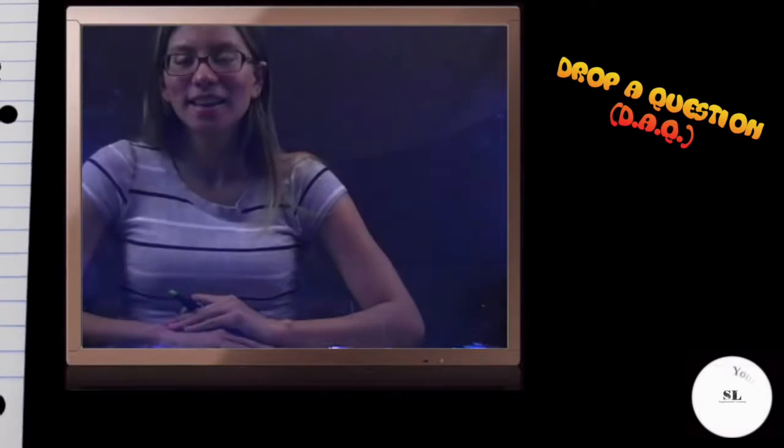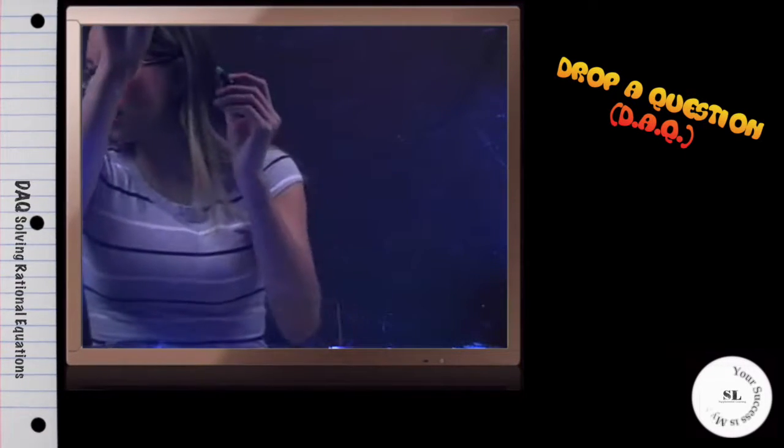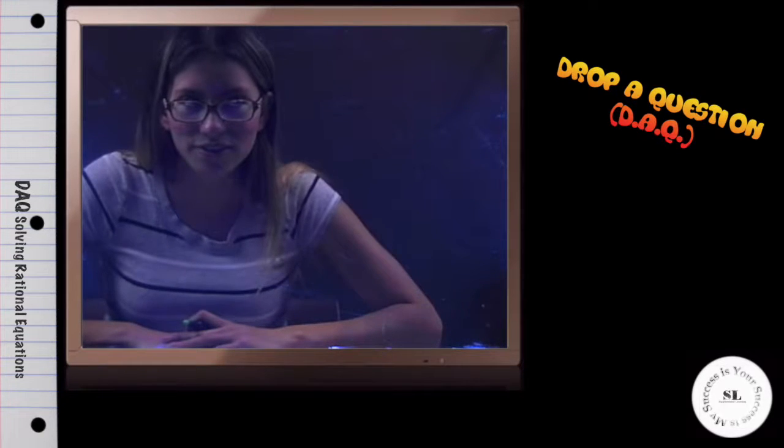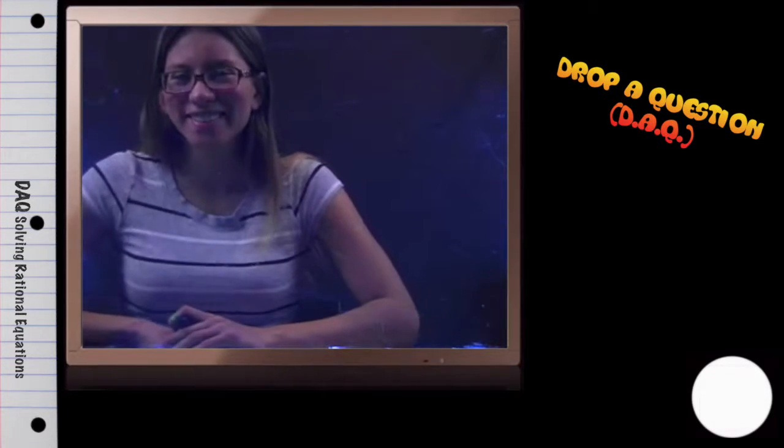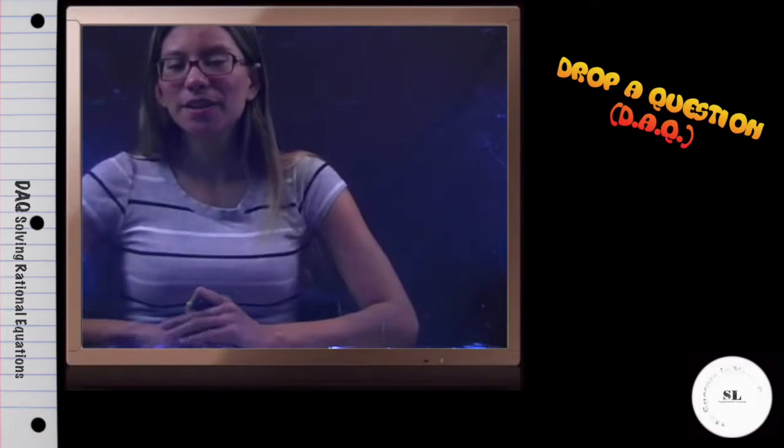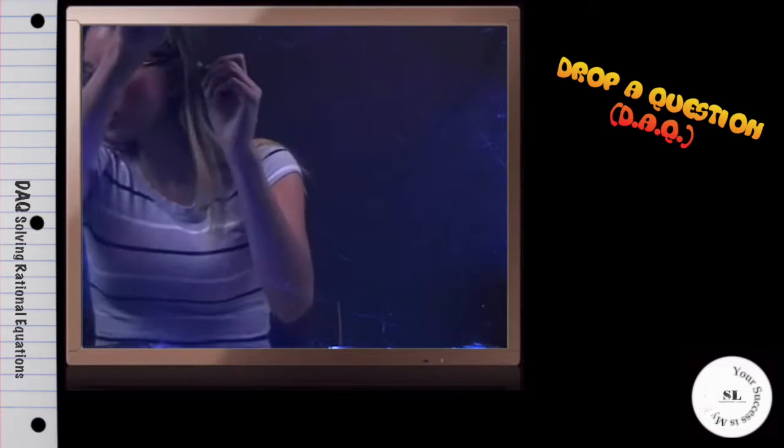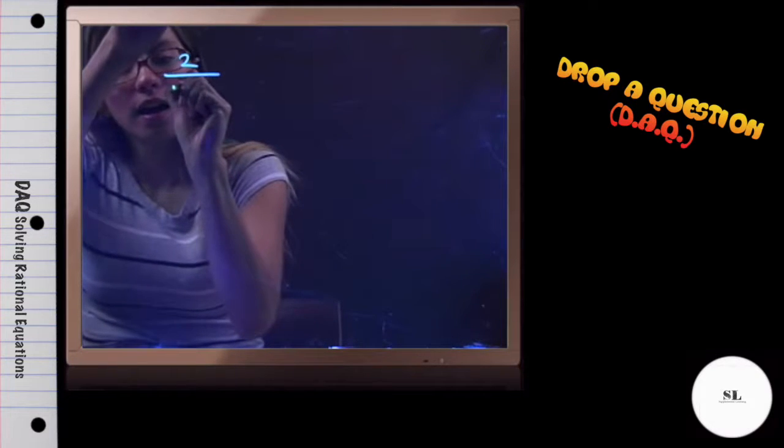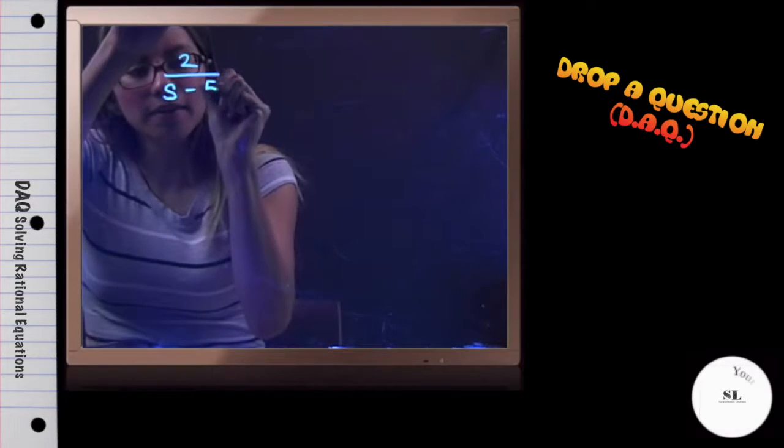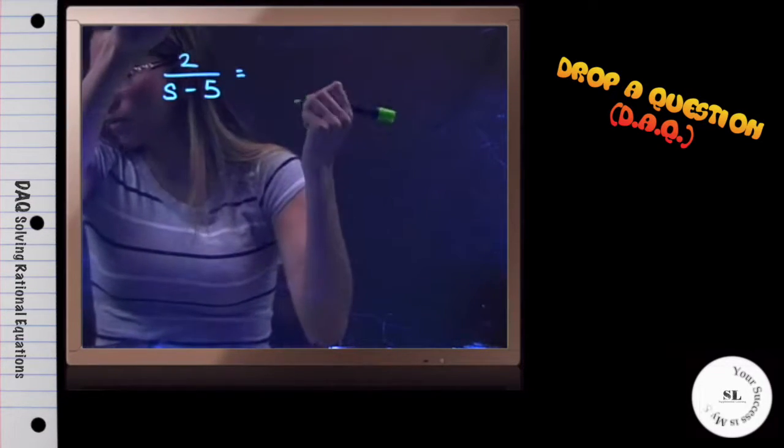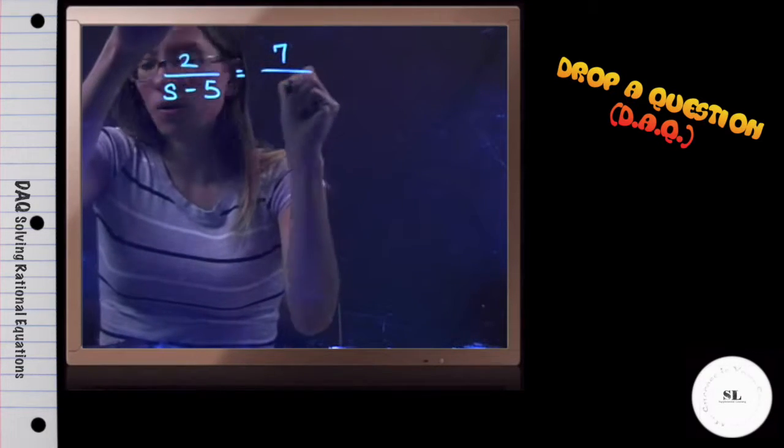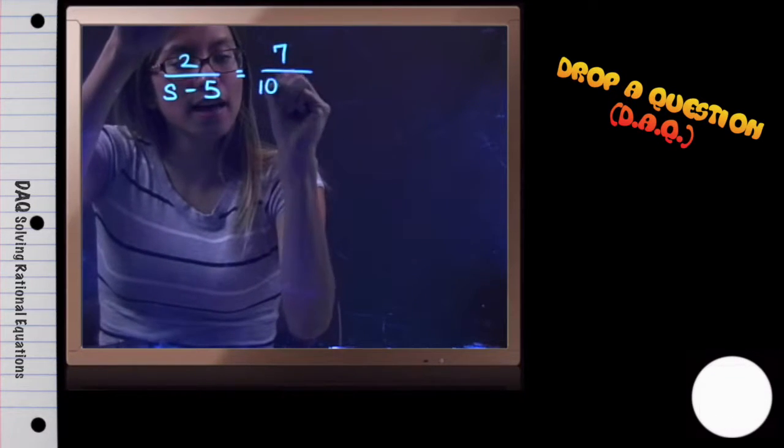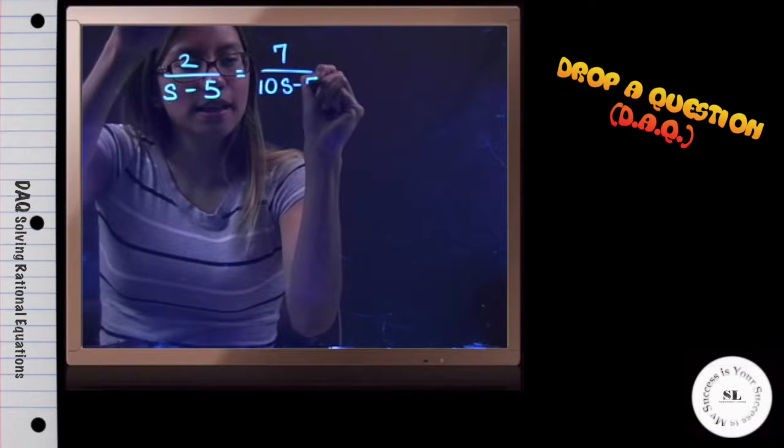For this drop a question, we are solving a rational equation: 2 over s minus 5 equals 7 over 10s minus 7.